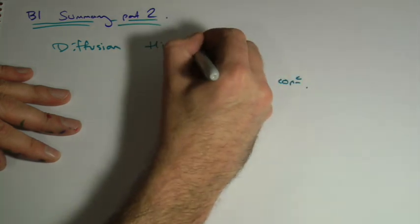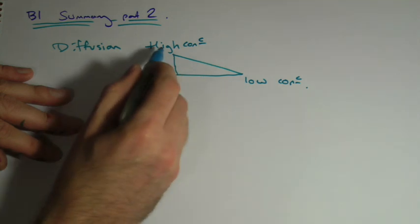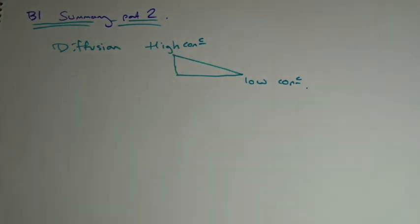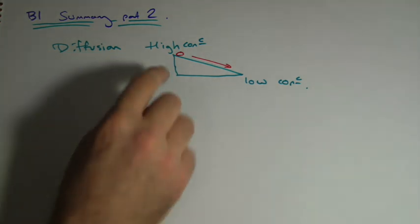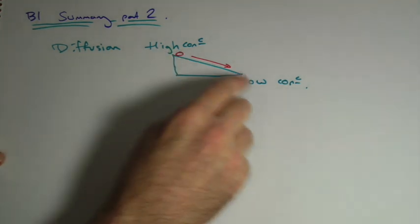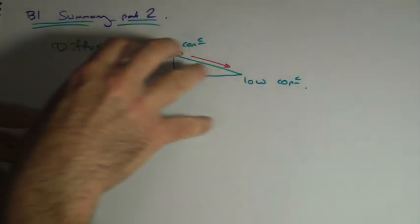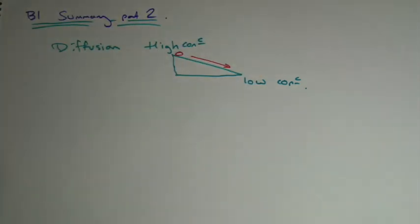They will go from a high to a low concentration, and you can think of it like a slope or a gradient. If this was a slope and I put a ball at the top, it would roll down. You don't have to do anything, it would roll down the gradient from high to low. It's actually a gravity gradient if you like, but particles move from a high to a low concentration.